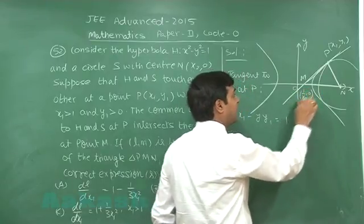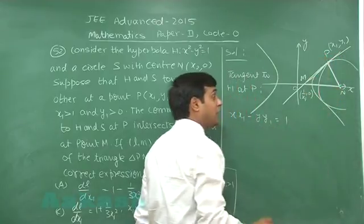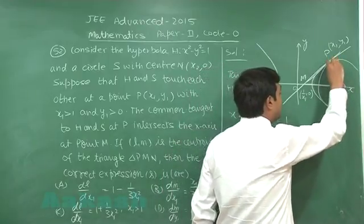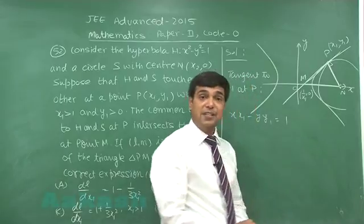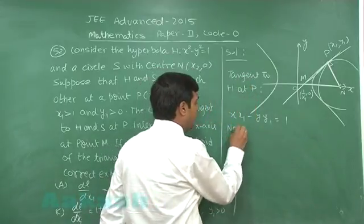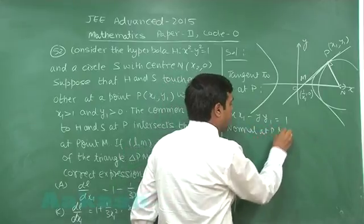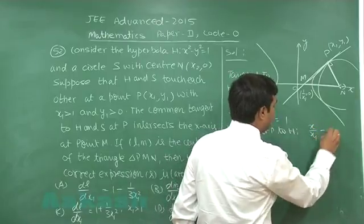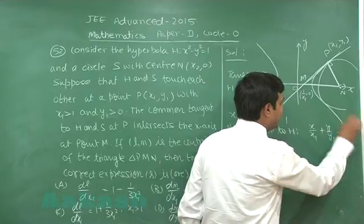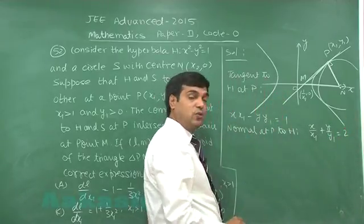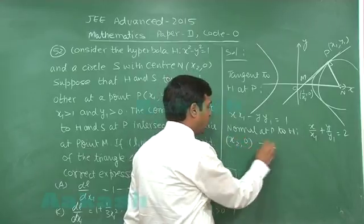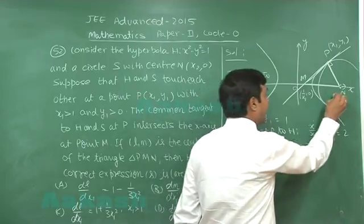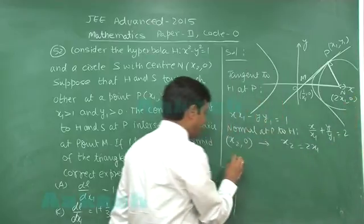Point M is at (1/x₁, 0) and point P is at (x₁, y₁). Now we need point N at (x₂, 0). The line PN is the common normal to both the circle and the hyperbola. The normal to the hyperbola at P is: x/x₁ + y/y₁ = 2. Passing through N at (x₂, 0), we get x₂ = 2x₁, so N = (2x₁, 0).